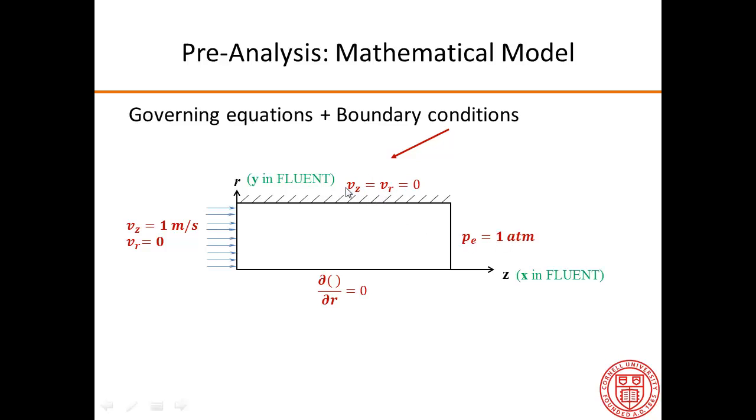At the wall, Fluent will impose that both the axial and the radial velocity is 0. At the axis, we have that the radial derivative is 0 for both the velocity and the pressure.